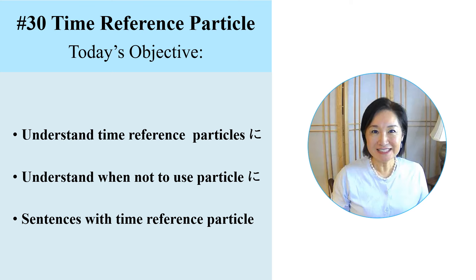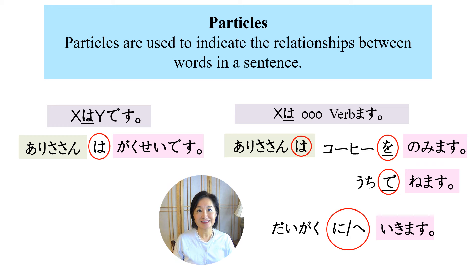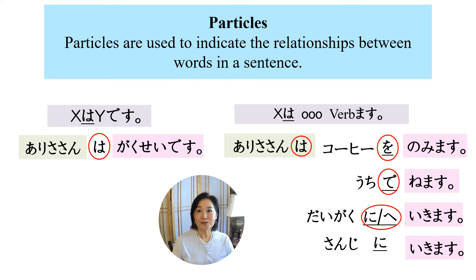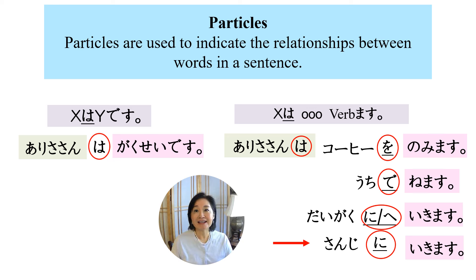こんにちは。今日のパーティゴーはタイム・リフェンス・パーティゴー・ニーです。So far in our discussions about sentences with verbs, we have covered the direct object particle を, the place of action particle で, and the destination particles に and へ. In today's lesson, we will learn particle に as a time-reference particle. The particle に serves multiple functions in Japanese. In our previous lesson, we learned about its use as a destination marker. Today, we will focus on using the same hiragana character に as a time-reference marker.